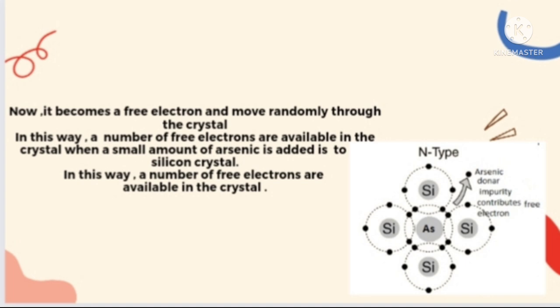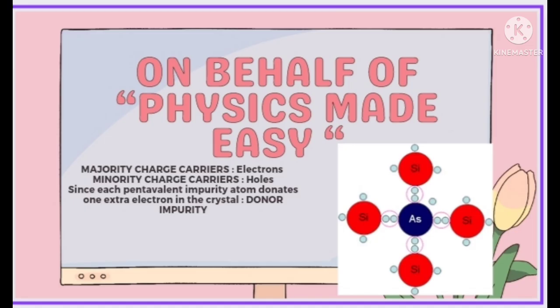The electron becomes free and moves randomly through the crystal. In this way, a large number of free electrons become available in the crystal when we add a small amount of arsenic to the crystal structure. In this type of semiconductor, the majority charge carriers are electrons, and the minority charge carriers are holes, which are thermally generated.